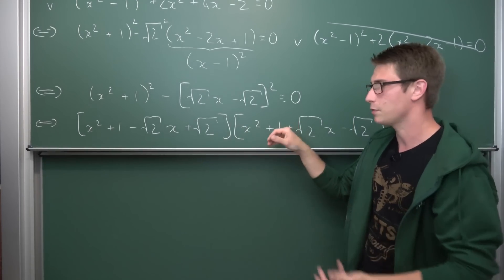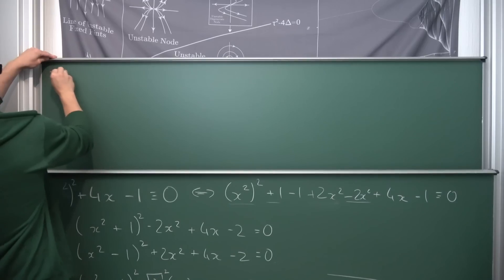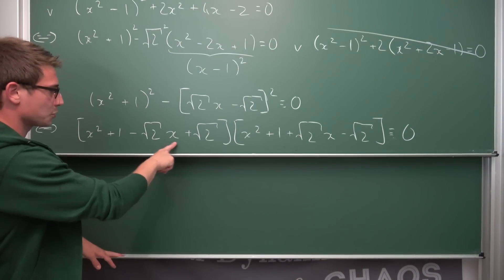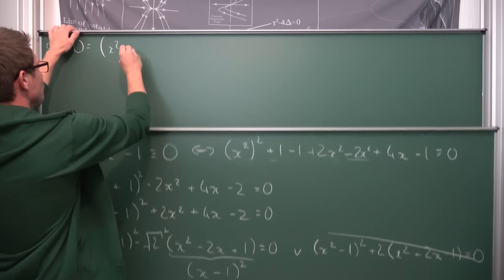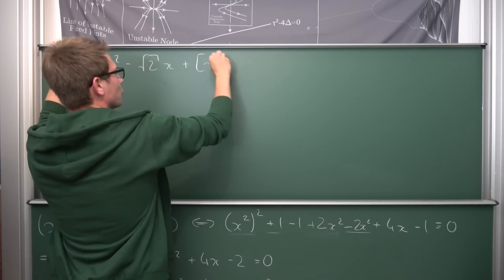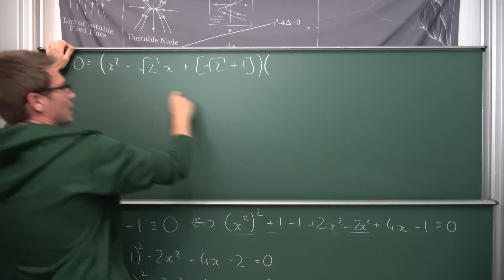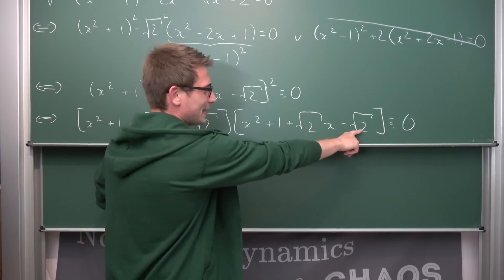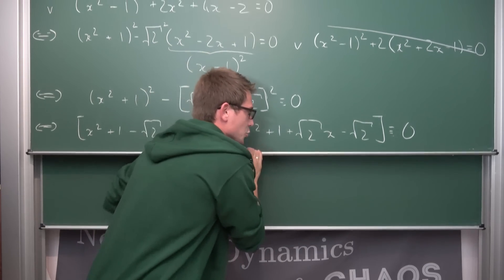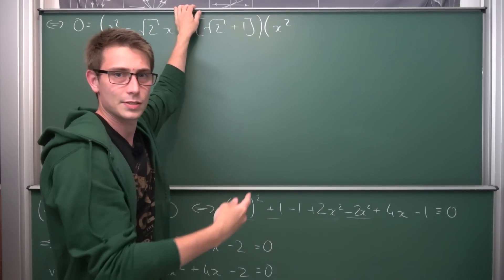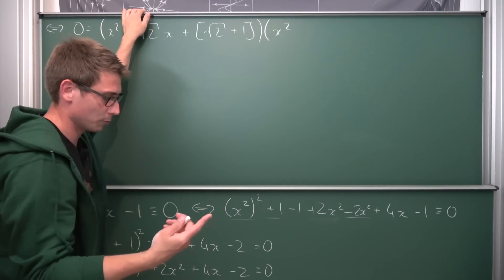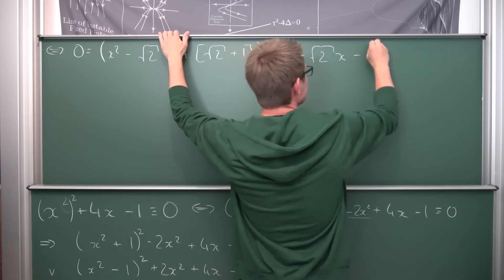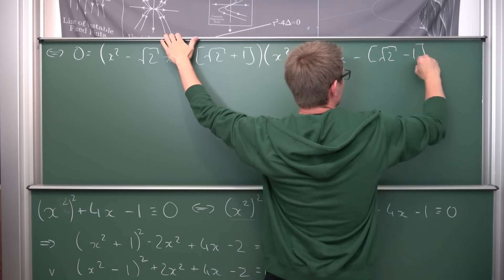Let's clean up the coefficients a little. The first factor sorted is: x² − √2·x + (√2+1) = 0. For the second factor, factoring out negative 1 from the constant term gives: x² + √2·x − (√2−1) = 0. It makes sense to factor out the negative 1 because it will appear in front of the coefficient in the quadratic formula. Now let's apply the quadratic formula to each.